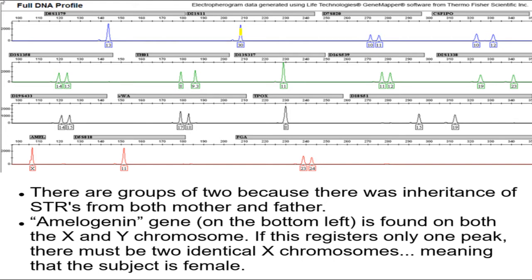Sometimes, coincidentally, both parents have the same number of repeats at a locus, so the peak comes out in the same place - you see only one signal instead of two. That can happen. But you usually see them in pairs. If you see four peaks for one STR, you probably have a contaminant - somebody else's DNA got mixed in. You should usually see two, or maybe one if both parents were the same.